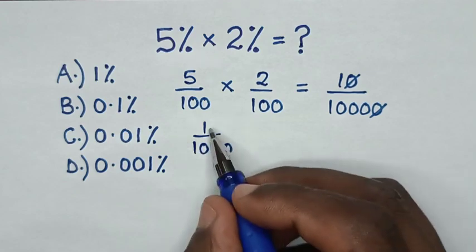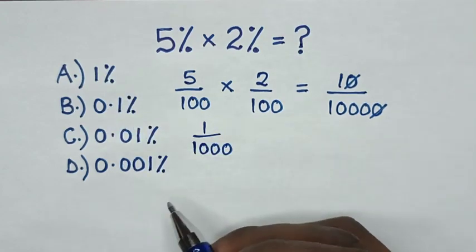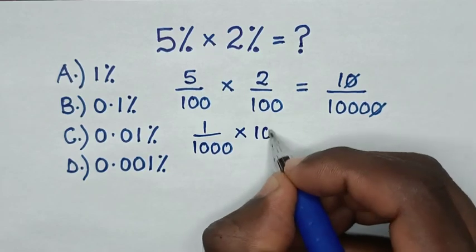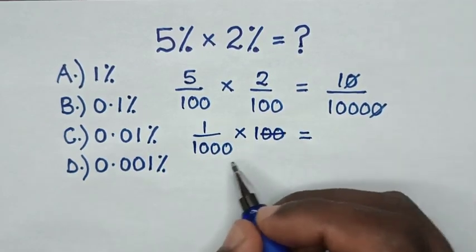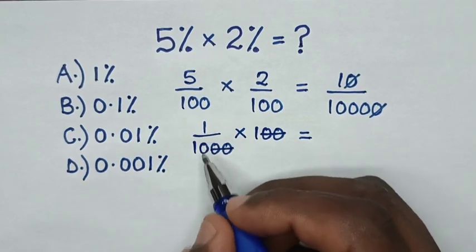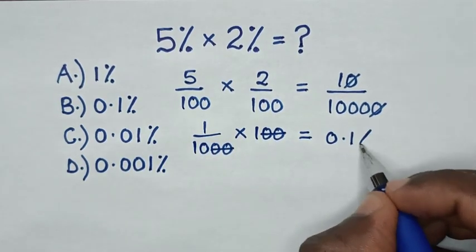But this is in fraction and our answers are in percentage, so we multiply this by 100%. Then it will be equal to, to simplify, this 20 will cancel with this 20, so it will be 1 over 10, which is 0.1%.